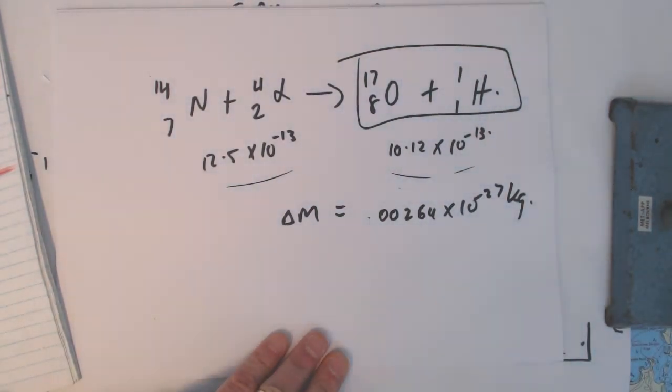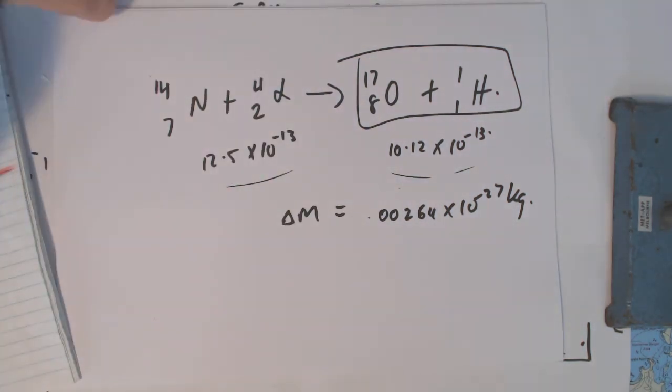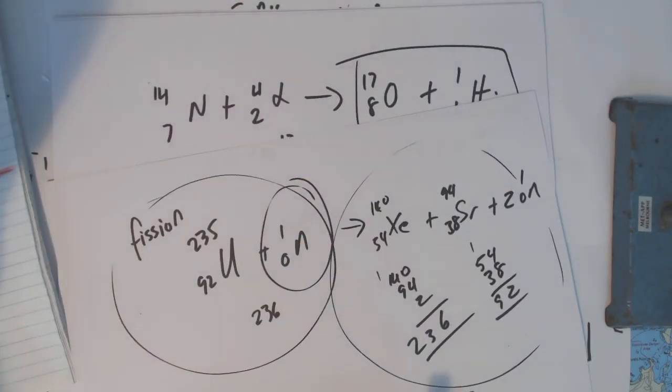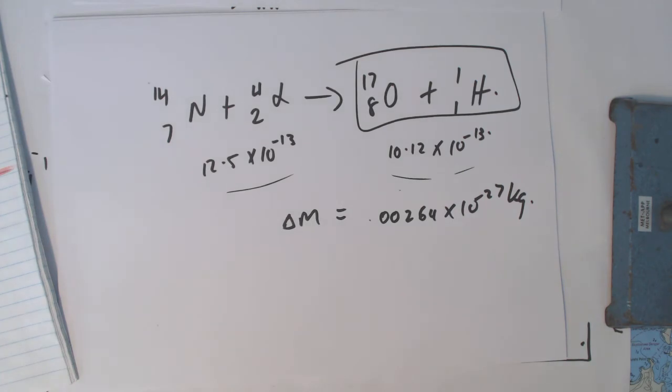Okay. That very small difference, 2.38 times 10 to the minus 13. So you can do all those sorts of calculations. Those all use E equals MC squared, that sort of thing. All right.